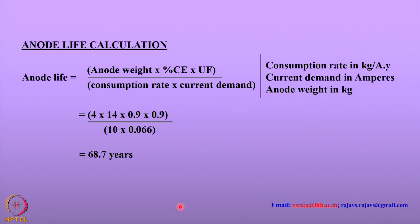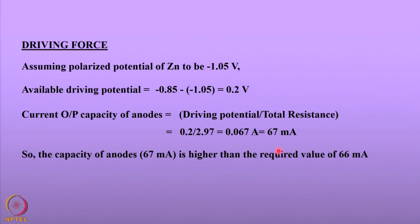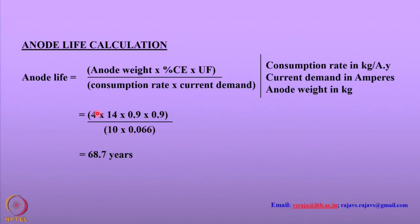However, there are concerns as zinc anodes passivate over time. Also, 4 anodes barely provide the required current of 67 milliamperes vs. 66 milliamperes. If the number of anodes is increased to 5, the life would be much longer, meaning zinc is being wasted. Therefore, we should avoid having more anodes than needed. One alternative is to consider a magnesium anode instead.